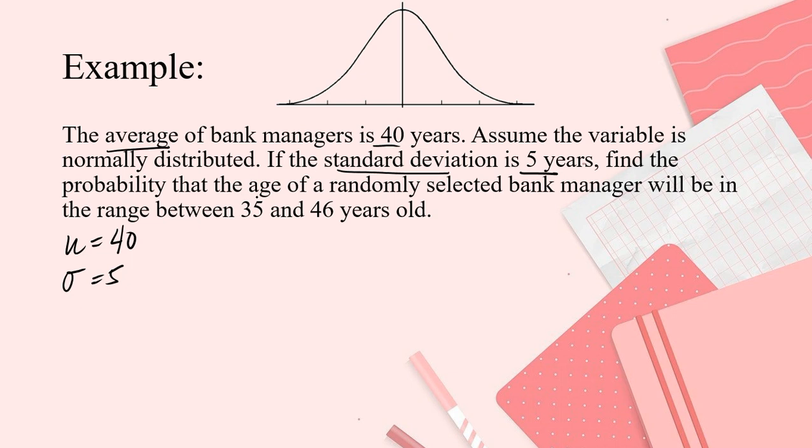Here, the age of the bank manager should range between 35 and 46. So, we see two X values. So, we also have two X values. X equals 35 and X sub 2 will be equal to 46. So, you will have two solutions.